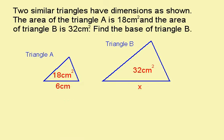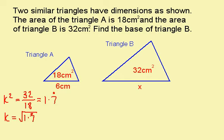Here's another question for you to try. Press pause and have a go at it. When you're ready for the answer, press play. This time, I'm going to start by finding k² by dividing this number by this number. This gives me 1.7 recurring. I can now find k by doing the square root of 1.7 recurring, which is 1.3 recurring. I now know that this length here is 1.3 recurring times this length. So x is 1.3 recurring times 6, and this gives me 8 cm.